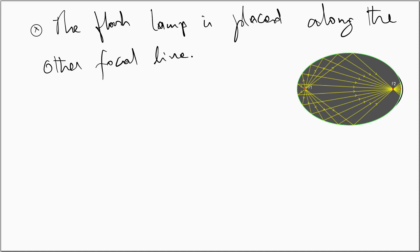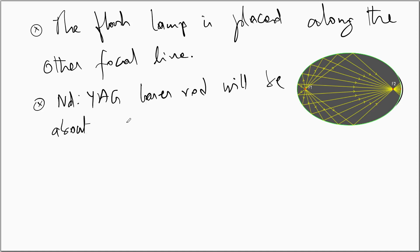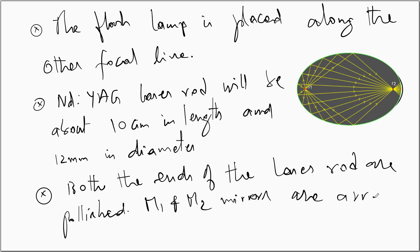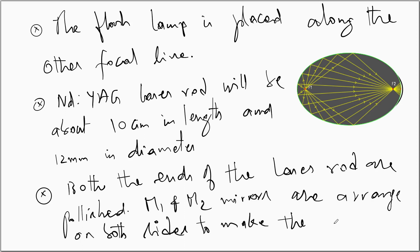So all the light emitted by the flash lamp will be focused on the laser rod. The light leaving one focus of the ellipse will pass through the other focus after reflecting from the silvered surface of the reflector. The Nd:YAG laser rod is about 10 centimeters in length and about 12 millimeters in diameter. Both ends of the laser rod are polished, and mirrors M1 and M2 are arranged on both sides to make the resonator. The resonator housing is an elliptical cylinder whose inner surface is silvered, along with the two end mirrors.